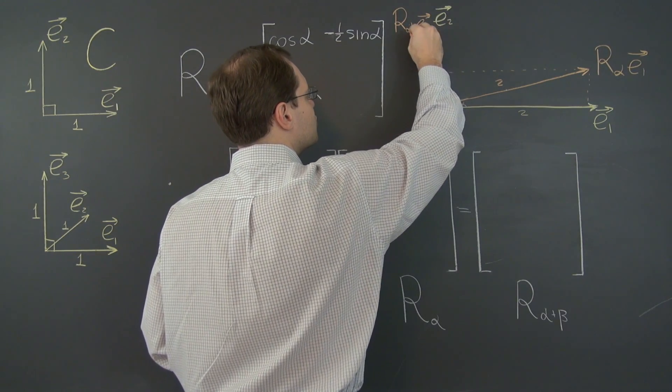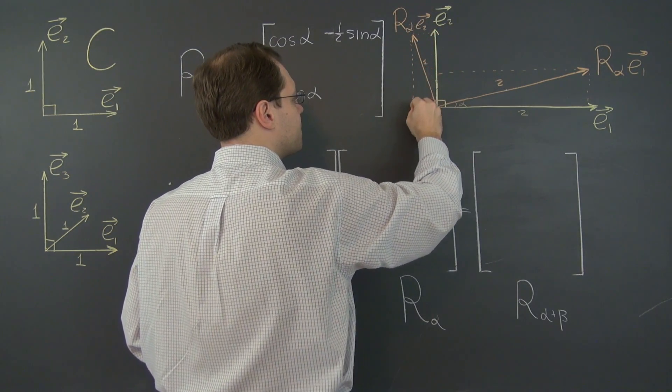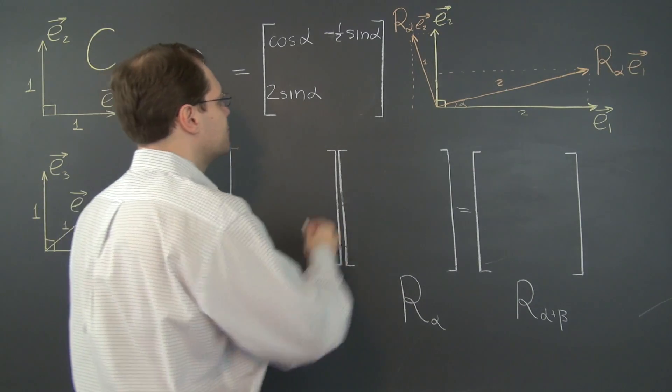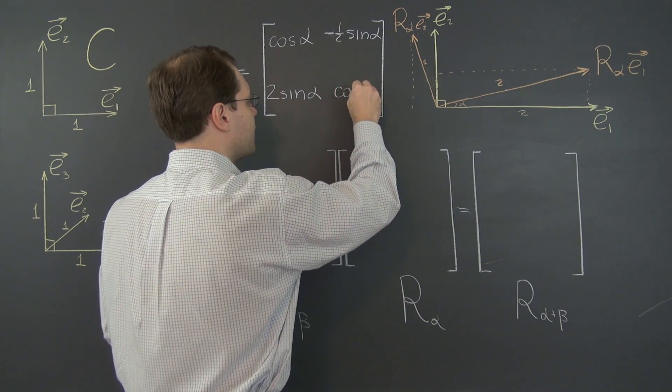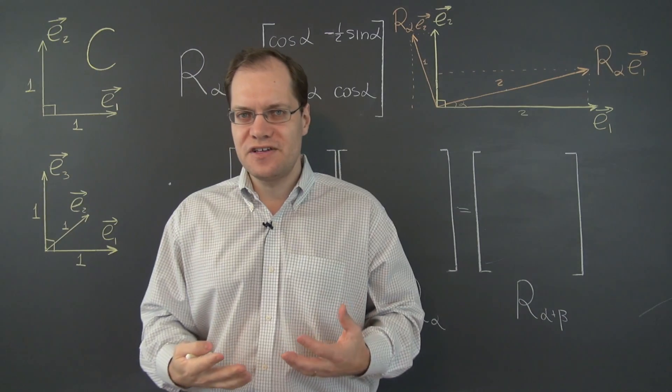Minus 1 half sine alpha and this as before is cosine alpha. Let me put in this detail just for completeness sake. So cosine alpha. Okay. So that task is finished.